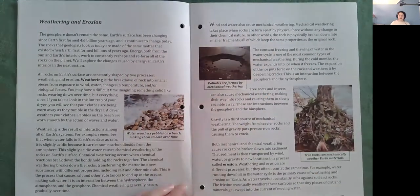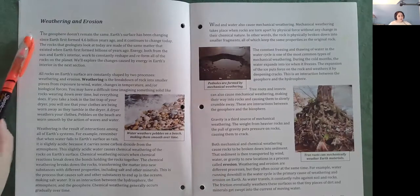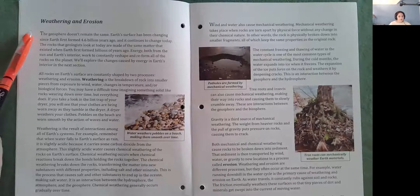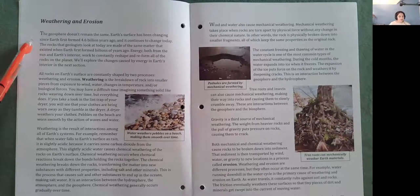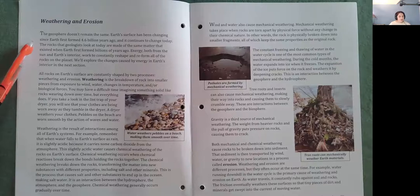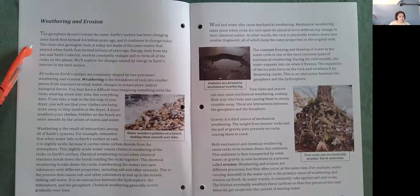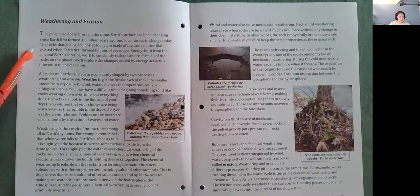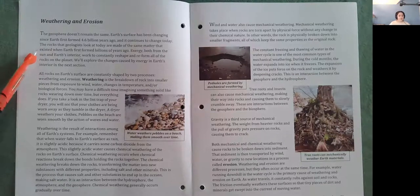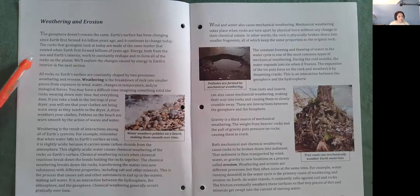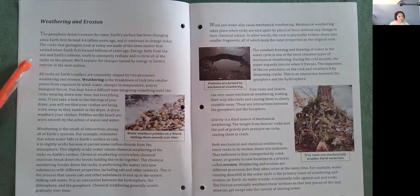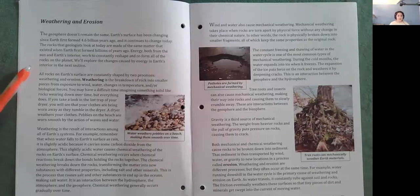Weathering and erosion. The geosphere doesn't remain the same. Earth's surface has been changing since Earth first formed 4.6 billion years ago, and it continues to change today. The rocks that geologists look at today are made of the same matter that existed when Earth first formed billions of years ago. Energy, both from the Sun and Earth's interior, work to constantly reshape and reform all of the rocks on the planet.